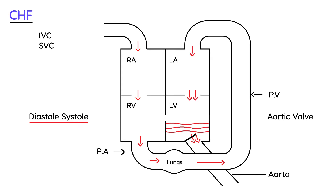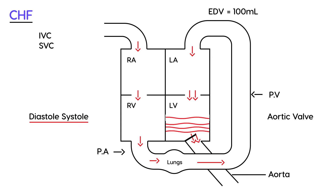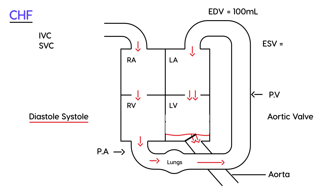Let's assign some values. At the end of diastole, the end diastolic volume — the amount of blood in the left ventricle at the end of diastole — is 100 ml. Then the aortic valve opens, blood flows into the aorta, and you look at the end systolic volume — how much blood is left in the left ventricle at the end of systole — let's say it's 40 ml. That means 60 ml went into the aorta.